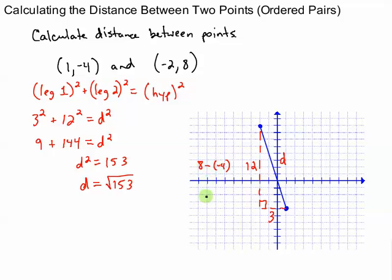To calculate the distance between two points, you simply subtract. So you take one Y coordinate minus the other Y coordinate. To calculate the X distance, you take this X value, which was positive 1, and you subtract from it the other X value, which was negative 2. So you take 1 minus negative 2. And that gives you the other leg, the difference in the X values.